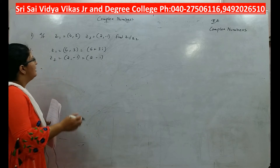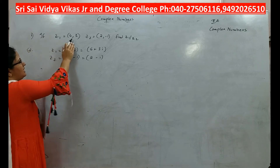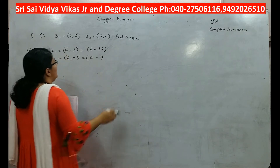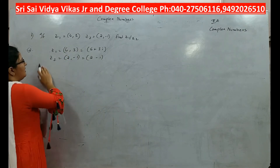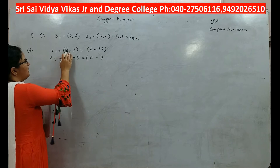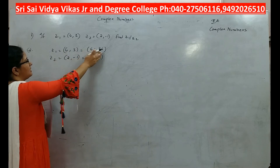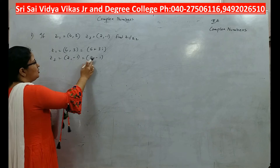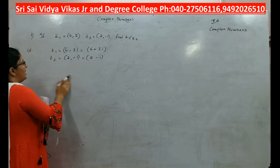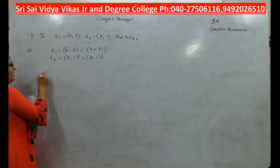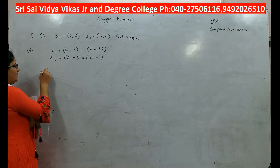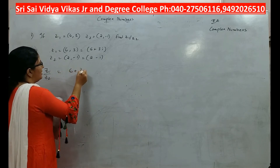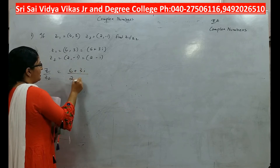Let us see — you have z1 equal to (6,3), z2 equal to (2,1), and you have to find z1 by z2. What is z1 here? (6,3) can be written as 6 plus 3i. z2 is (2,1) which can be written as 2 minus i.